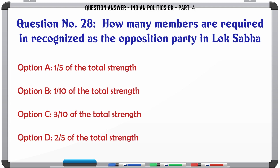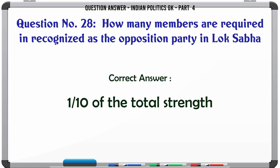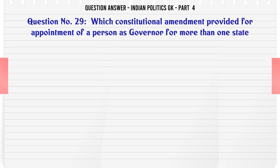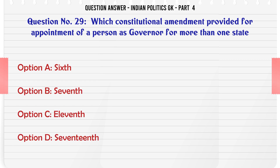How many members are required to be recognized as the opposition party in Lok Sabha? A. One-fifth of the total strength. B. One-tenth of the total strength. C. Three-tenths of the total strength. D. Two-fifths of the total strength. The correct answer is one-tenth of the total strength.